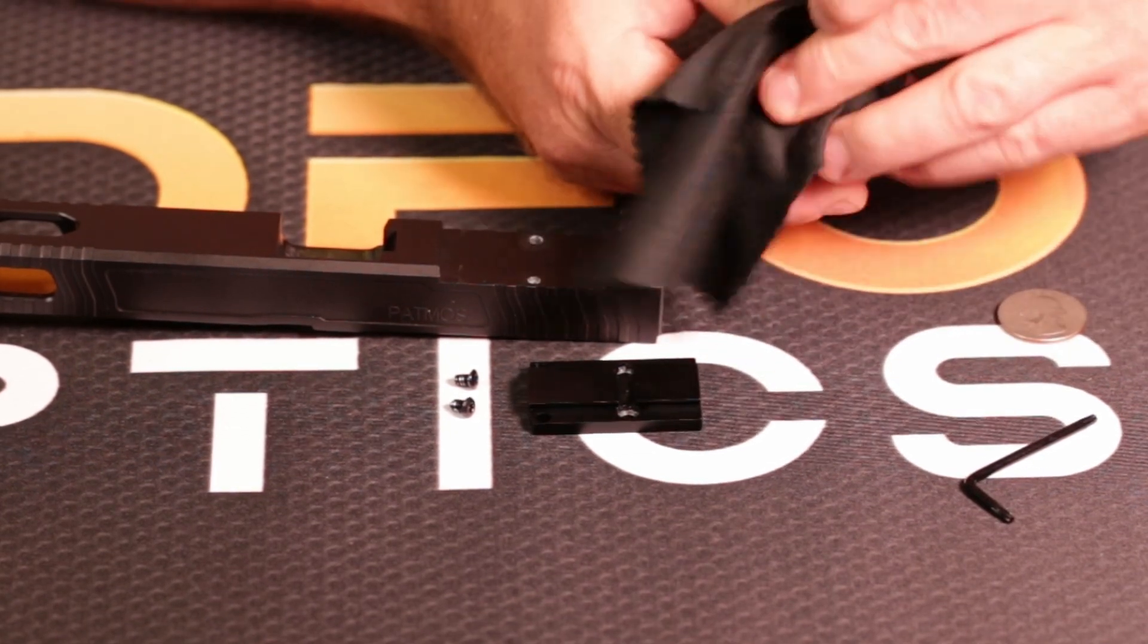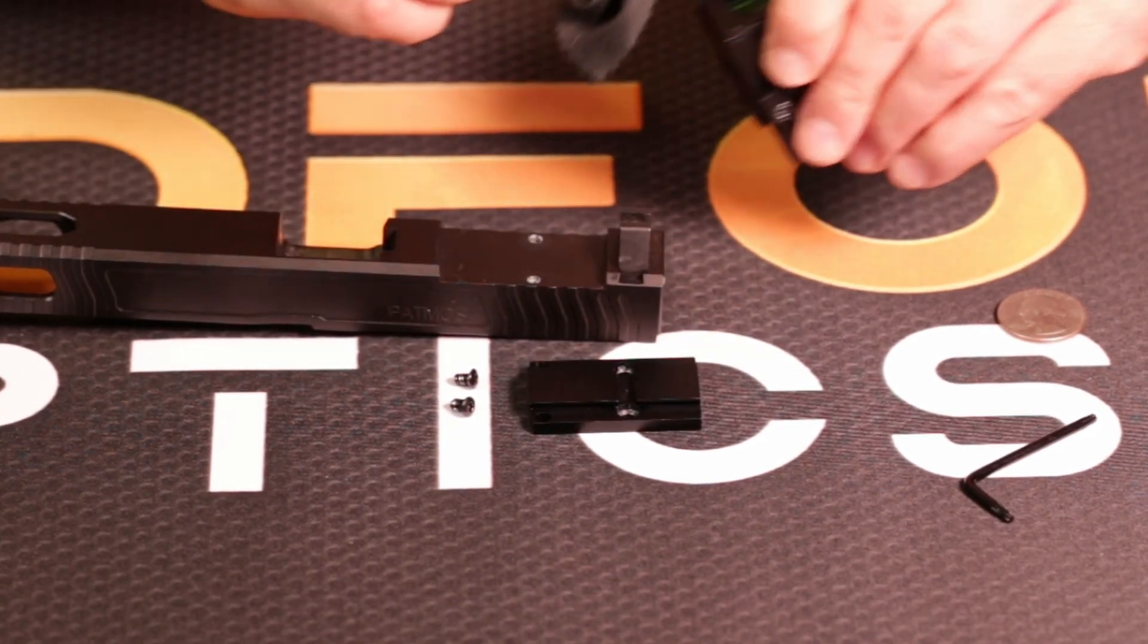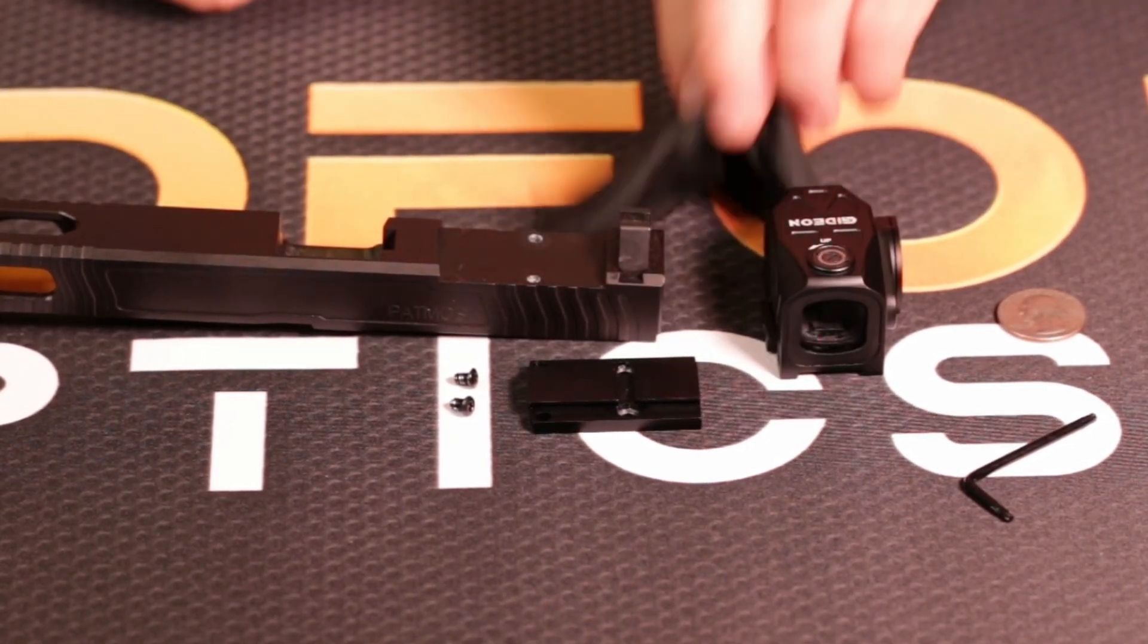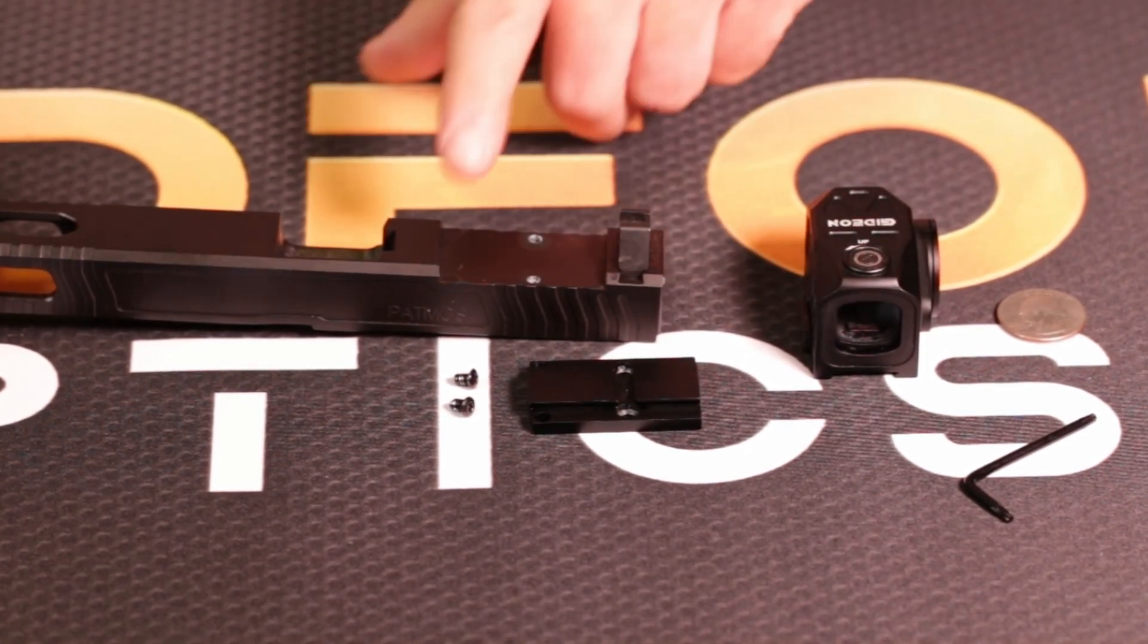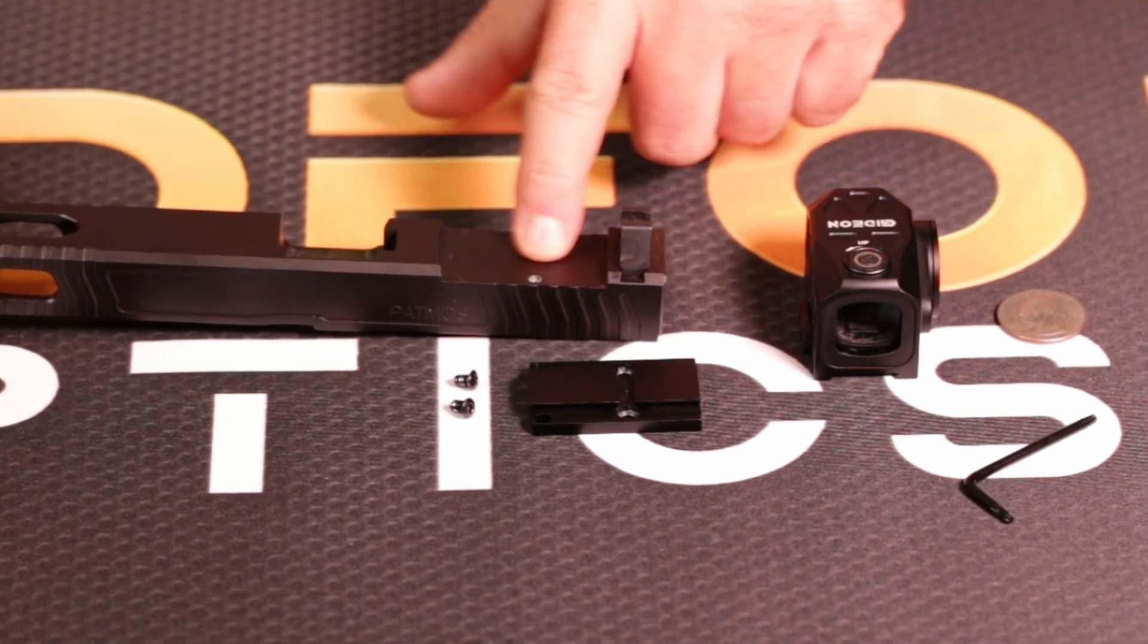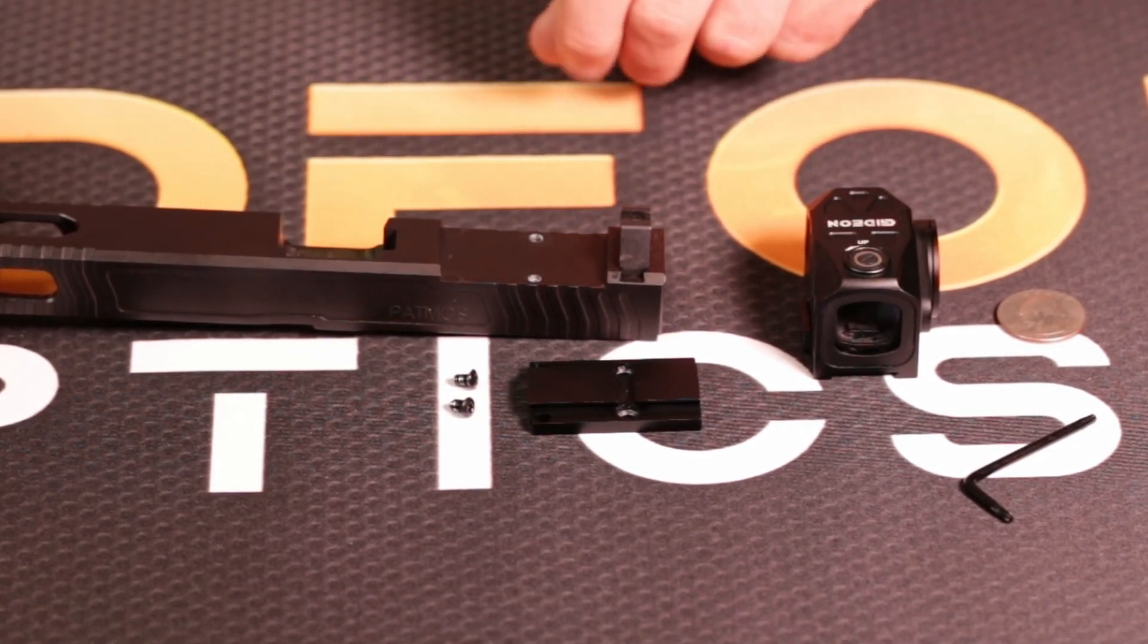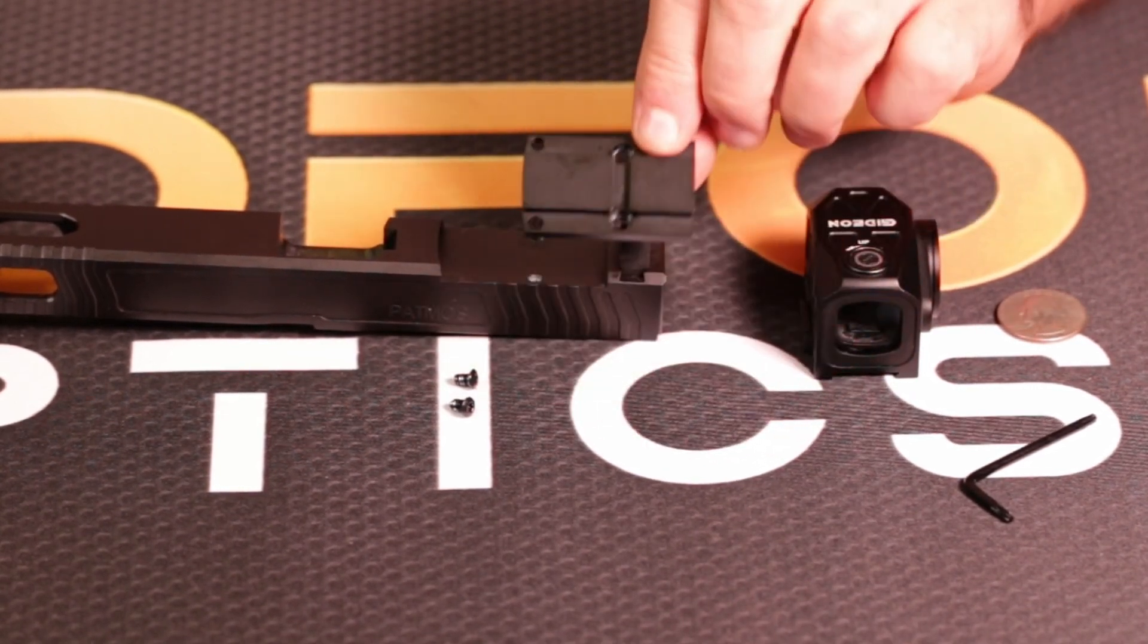Okay, now that we know that we have a functional red dot, with some fingerprints on the glass, we are going to put it on our pistol slide. This is a Patmos Arms Glock 34 slide. You can get it through JSD Supply. If you have a Glock and it does not have a footprint already cut for it, you can send it to a gunsmith and get it cut, or you can just buy one from JSD, which is what I would recommend. And here is our RMR to Acro adapter, which you can get from GideonOptics.com.